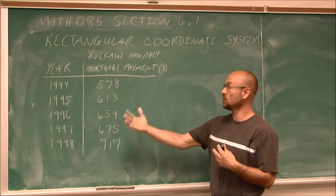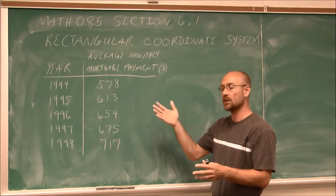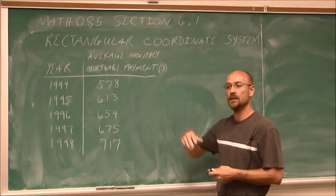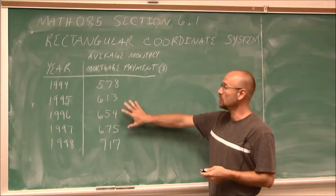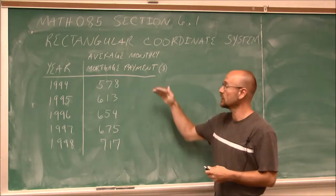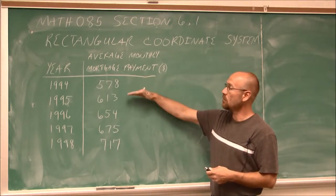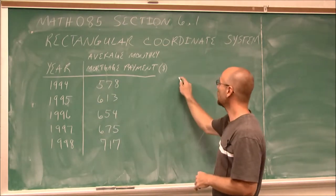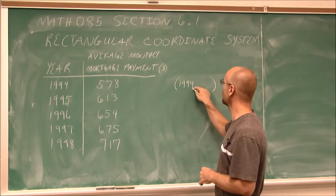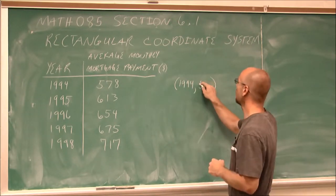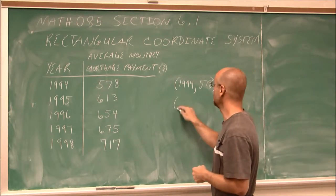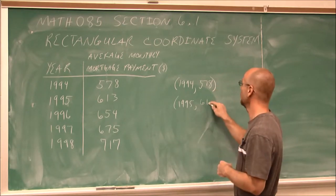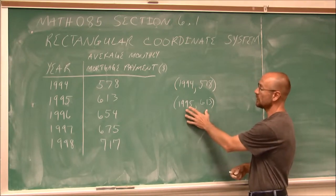If we want to predict future things, maybe we can put this on a graph and look at its behavior and see what it's doing, and maybe predict what the average monthly mortgage payment is going to be in the year 2020. So what we can do is actually graph this. These are paired data — in this year we had this much, in this year we had this much. So we could write this paired data as an ordered pair: 1994 corresponds to 578, 1995 corresponds to 613. So we call these ordered pairs.